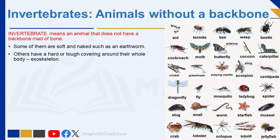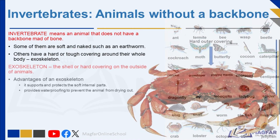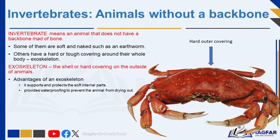First, let us look at animals that do not have a backbone. These animals are also called invertebrates. They do not have a backbone and they do not have bones. Some of them are soft and naked, such as an earthworm or a slug. Others have a hard or tough covering around their whole body, for example a cockroach and a crab. These hard outer coverings include shells, called an exoskeleton. You can also say invertebrates have exoskeletons.